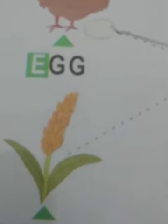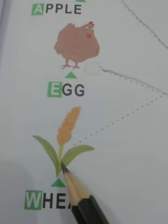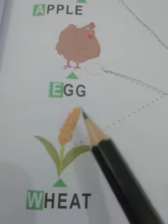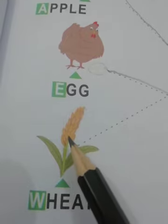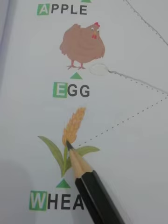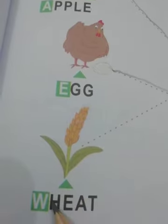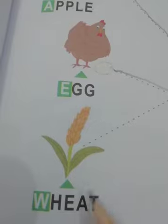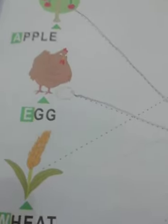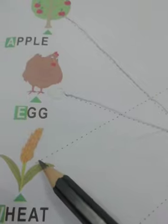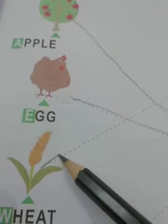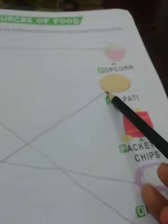Next देखो wheat दिख रहा है. Wheat जब खेत में farmer उगाता है अपने field में, और जब बालियाँ आती हैं तो इनका छिलका हटाकर देखते हैं तो इसमें wheat — गेहूँ होता है. ठीक है. और इसको चपाती के पास match कर देंगे.